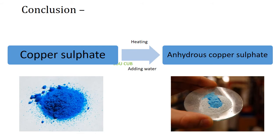A blue-colored chemical called copper sulfate is present in the laboratory. When it is heated, it turns white. White-colored copper sulfate is called anhydrous copper sulfate. When water is added to anhydrous copper sulfate, it turns blue again. So we can conclude that the liquid droplets formed inside the test tube are water.